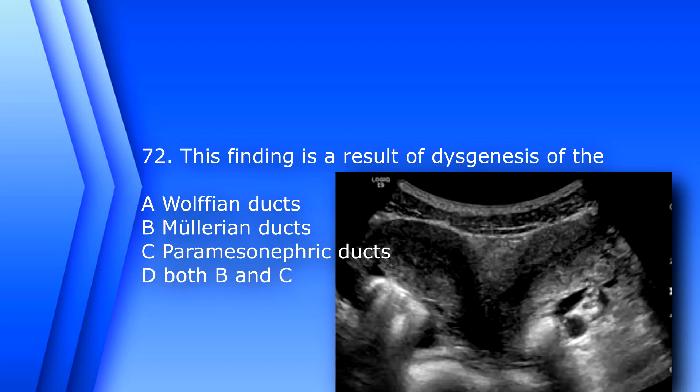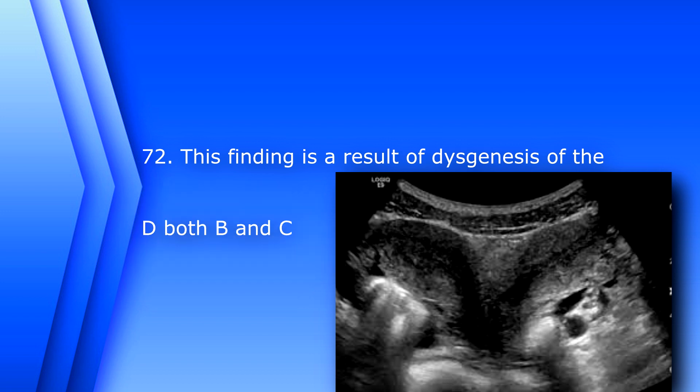Question 72. This finding is a result of agenesis of the: A. Wolffian ducts, B. Müllerian ducts, C. Paramesonephric ducts, D. Both B and C. The answer is D, Both B and C. This is a didelphic uterus, which is an anomaly of Müllerian development. The Müllerian ducts are also known as the paramesonephric ducts, and the Wolffian ducts — the male counterpart — are called the mesonephric ducts.